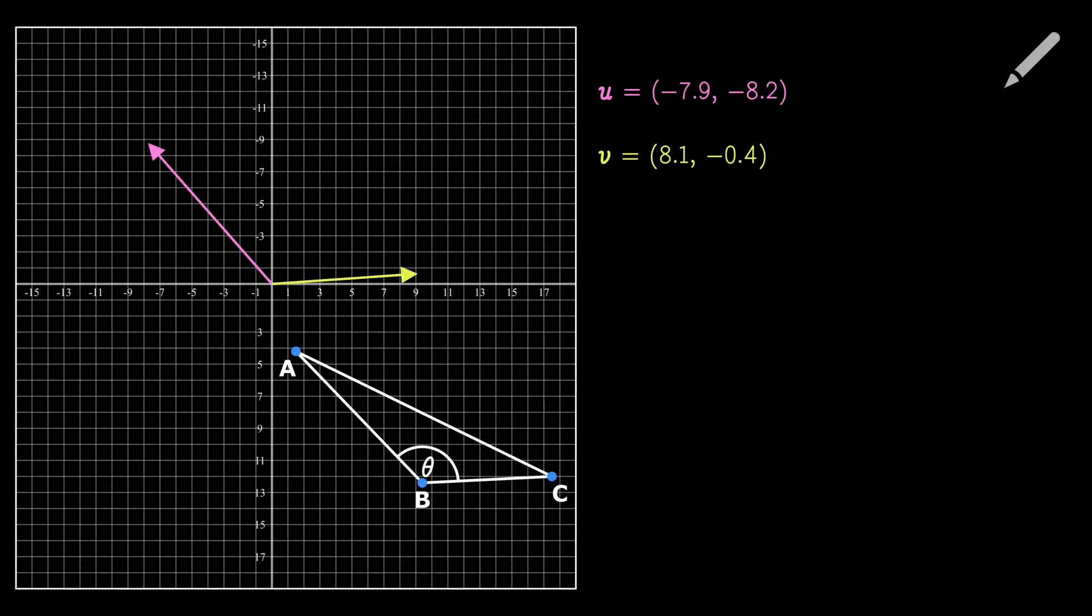With vectors U and V, we can apply the following formula: the cosine of the angle formed by two vectors. The inner product of U and V, divided by the norm of U times the norm of V. Let's calculate it.